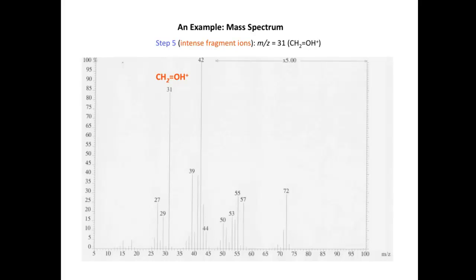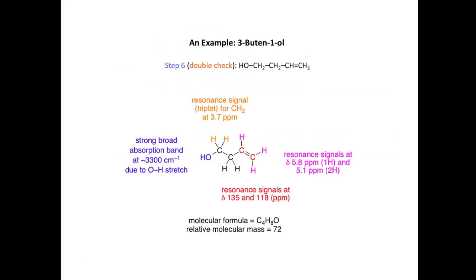Looking again at the mass spectrum for fragment ion information: there is an intense fragment ion at around 31, and we can identify that this ion is responsible for the M/Z value of 31, which is consistent with the CH2OH group being present in our unknown molecule. Putting all that information together, our unknown molecule is 3-butene-1-ol, which has an OH group at one end of the carbon chain and the alkene at the other end.